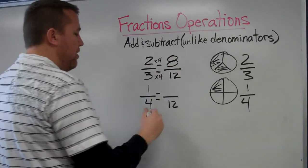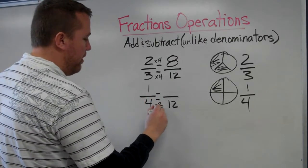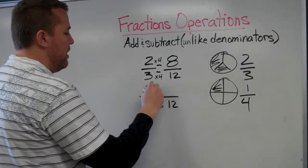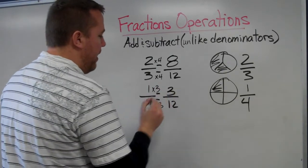So now I have two-thirds equals eight-twelfths, and one-fourth - fourths going to twelfths, times the bottom by three, so I times the top by three, and I get three-twelfths.